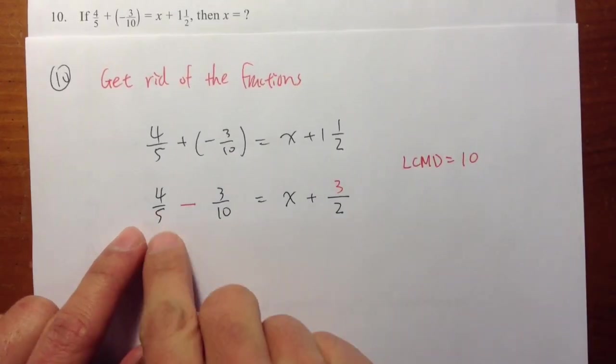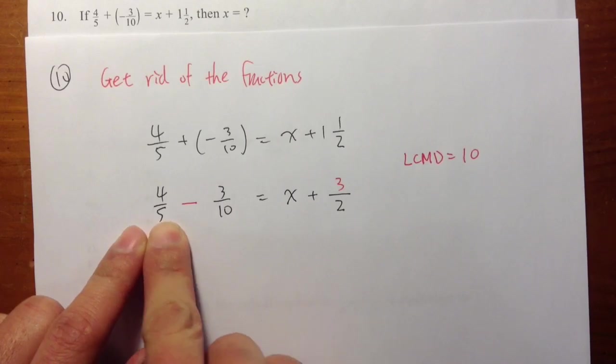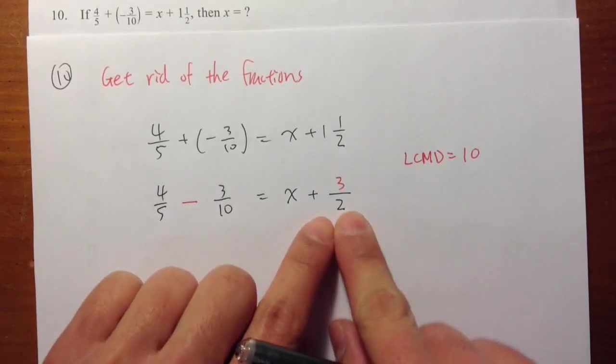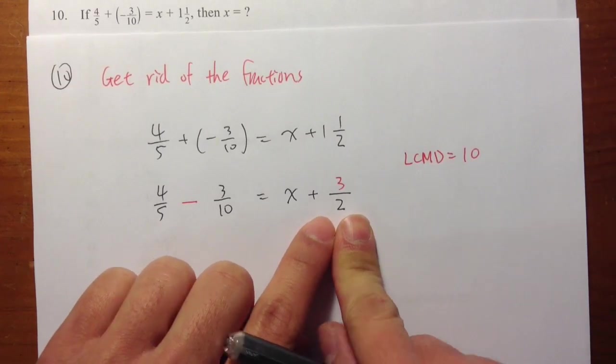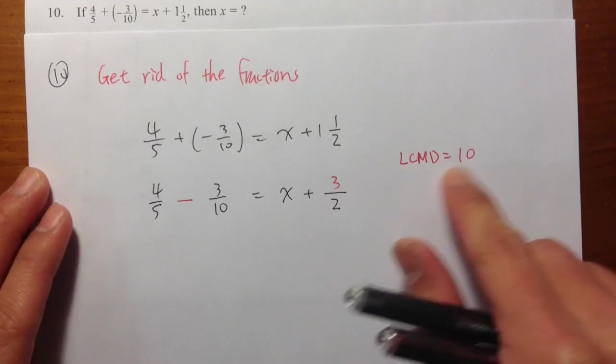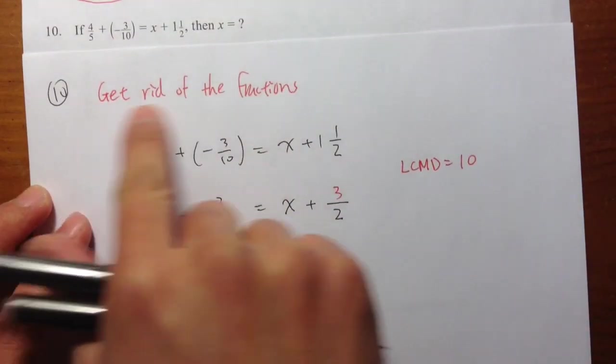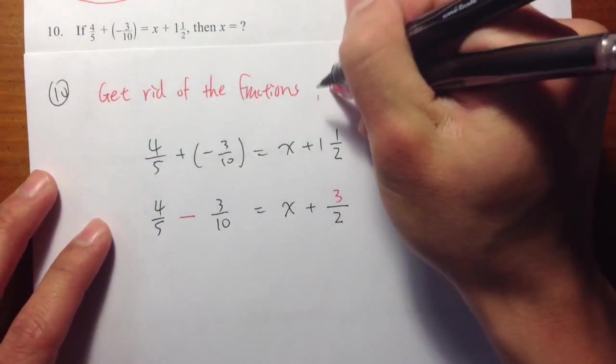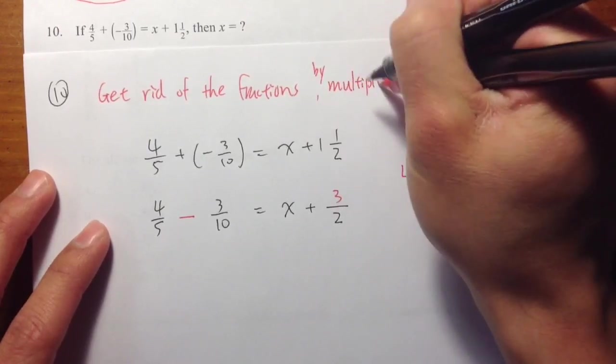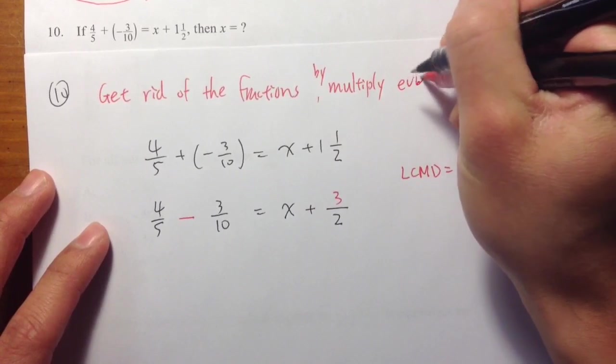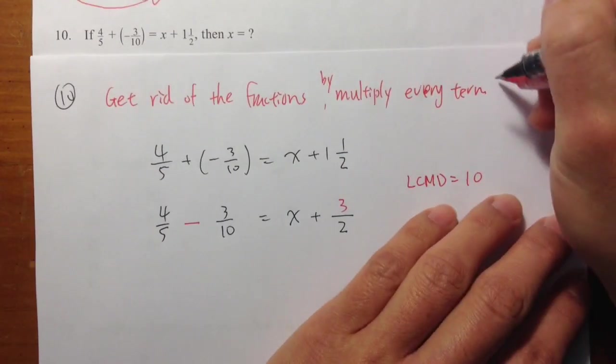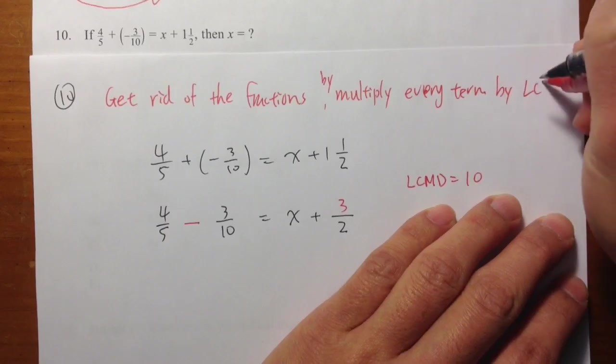Which is equal to 10, right? Because if you think about it, 5 times 2 can be equal to 10. 10 times 1 is equal to 10. 2 times 5 is also equal to 10. So first, determine what's the lowest common multiple of the denominator. We can get rid of the fractions by multiply every term by the LCMD.